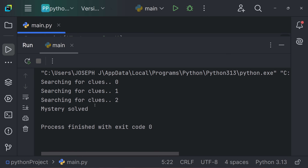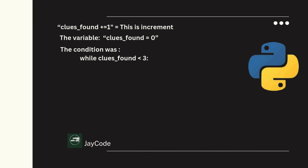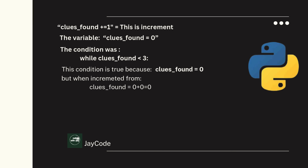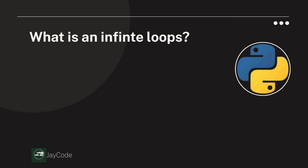Let's run the code. We get 'searching for clues' — this code keeps running until something changes. If the detective finds three clues it stops. It searches from zero to one to two — that's three clues — then 'mystery solved'. The increment clues_found += 1 is key. The condition 'while clues_found < 3' starts true at zero, but as it increments from zero to one to two, the condition becomes false and breaks the while loop.